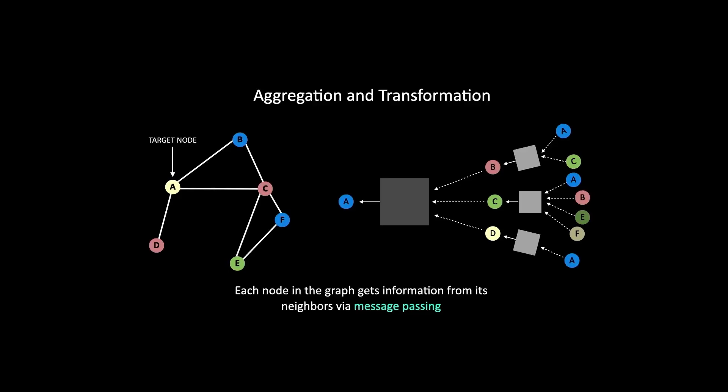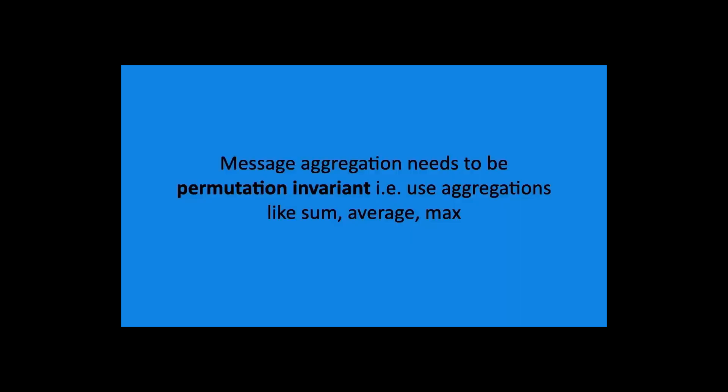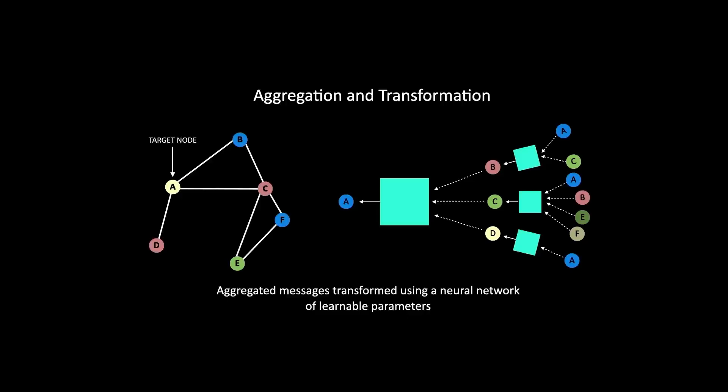Message passing involves aggregation and transformation. The transformation of the messages — that is, the embeddings from neighboring nodes — is done by passing them through a neural network. The messages from neighboring nodes are then aggregated. In graph structures, there is no inherent ordering to the neighbors of a particular node. This means that the aggregation operation performed during message passing needs to be permutation invariant, meaning you use aggregations such as sum, average, or max, which produce the same results no matter what order you feed the inputs in. The transformation applied to the messages passed between nodes uses a neural network of learnable parameters.